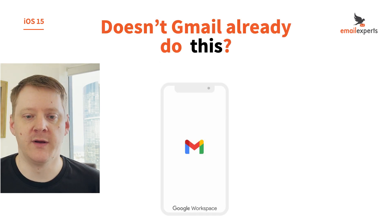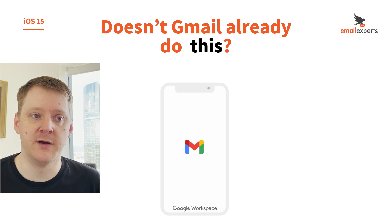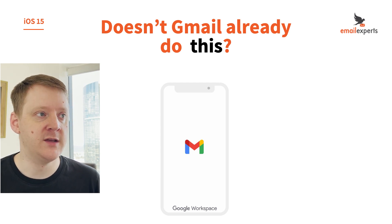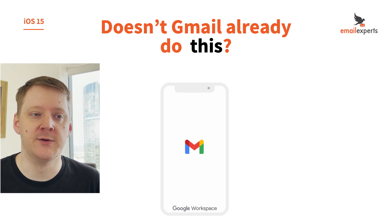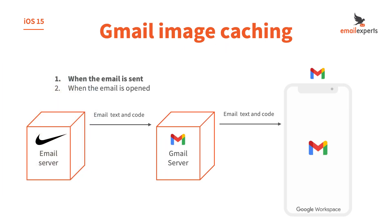For those of you who've been around in email marketing for a while, you might be asking: doesn't Gmail already preload images? Well, kind of. In 2014, Gmail started caching images. Let's split this down into two events — when an email is sent and when an email is opened — and then there are three components: the email sending server (in this case Nike), the Gmail server, and the Gmail app on your phone.